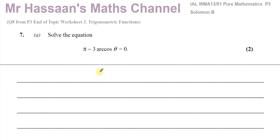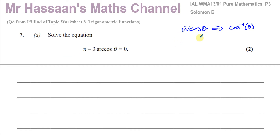Question number 7, part A, tells us to solve this equation: π minus 3 arc cosine θ equals 0. Now the word arc cosine θ is just another way of saying the inverse of cosine θ. They mean exactly the same thing. You'll see the word arc cosine especially in some of the older books. A lot of mathematicians prefer to use arc cosine rather than inverse cosine - same with sine and tan. So they basically mean exactly the same thing.